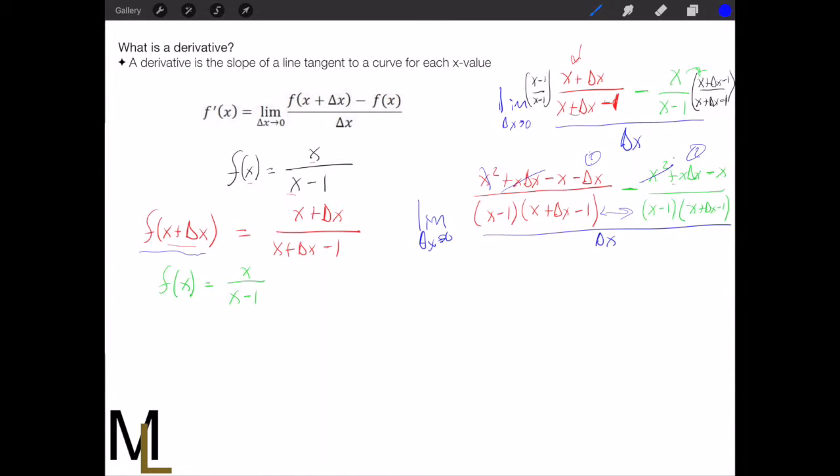Once again, we're seeing nice cancellation, so we're on the right track. This guy can cancel with this guy because of the negative again. Then we get minus x minus minus x. So those guys cancel.